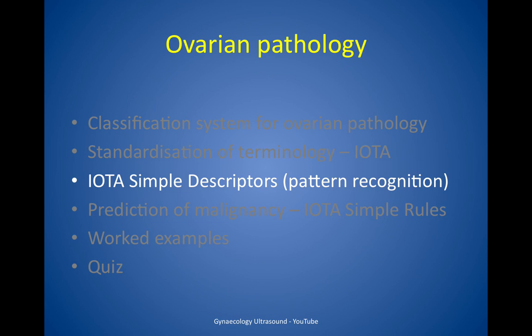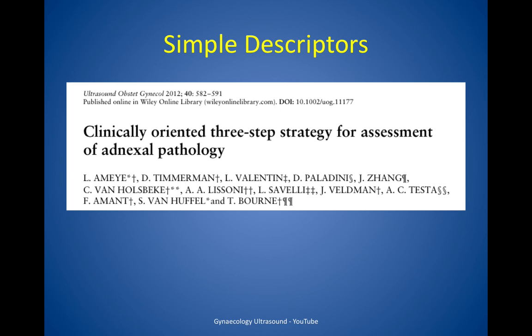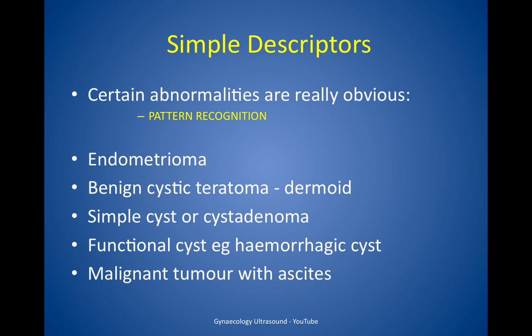IOTA simple descriptors — this is really pattern recognition. Sometimes when scanning, certain abnormalities are really obvious. Examples are: endometrioma, a benign cystic teratoma or dermoid, a simple cyst or cyst adenoma, a functional cyst like a hemorrhagic cyst, or a malignant tumour with ascites.